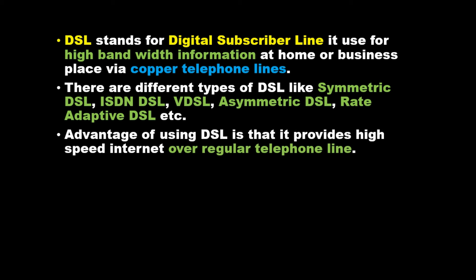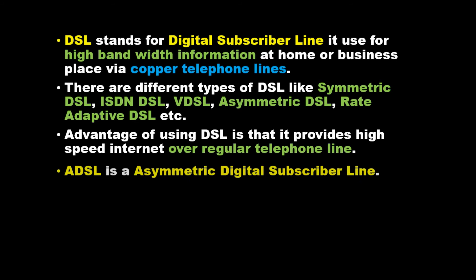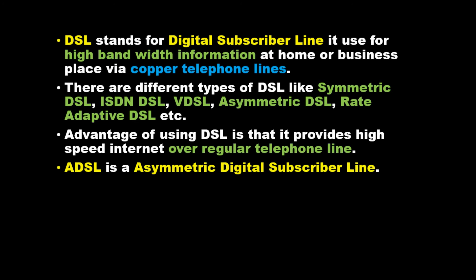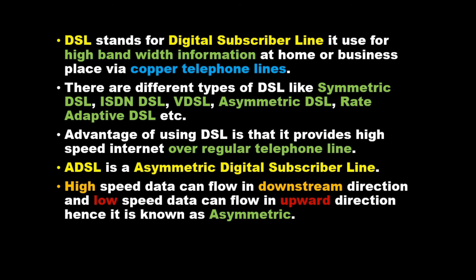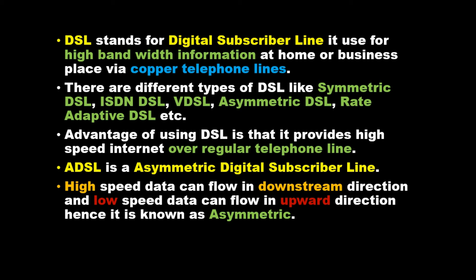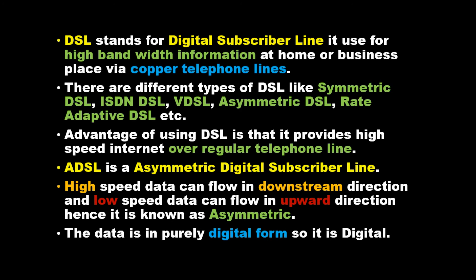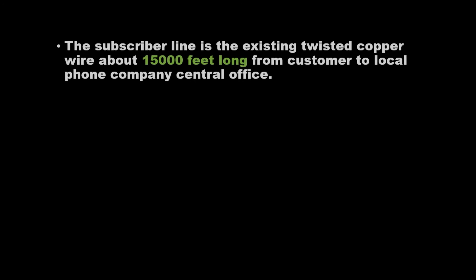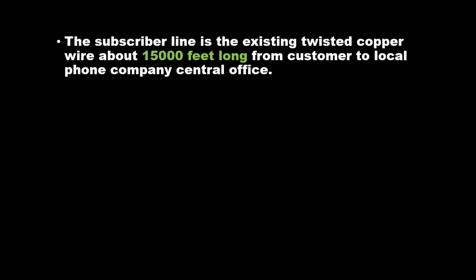An advantage of using DSL is that it provides high speed internet over a regular telephone line. ADSL is Asymmetric Digital Subscriber Line. High speed data can flow in the downstream direction and low speed data in the upstream direction, hence it is called asymmetric. The data is in purely digital form, so it is digital. The subscriber line is the existing twisted copper wire, about 15,000 feet long, from the customer to the local phone company central office.